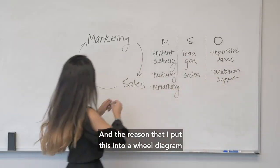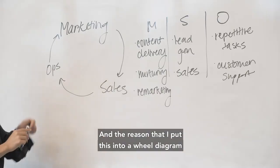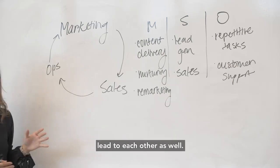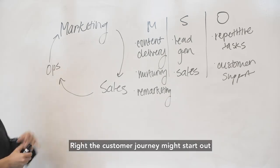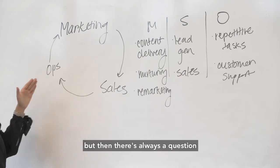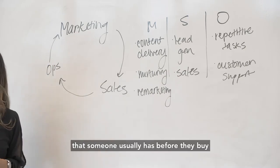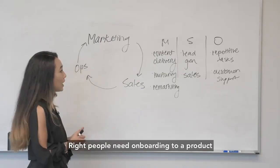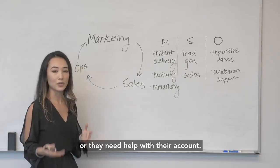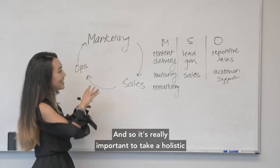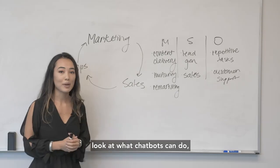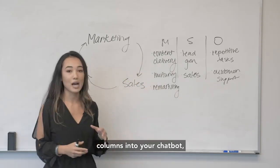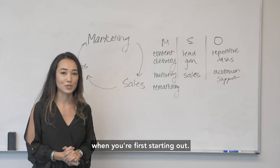The reason I put this into a wheel diagram is because all of these are interconnected and they all lead to each other. The customer journey might start out with marketing, go to sales, but then there's always a question someone usually has before they buy as well as after. People need onboarding to a product or help with their account. So it's really important to take a holistic look at what chatbots can do and implement one from each of these columns when you're first starting out.